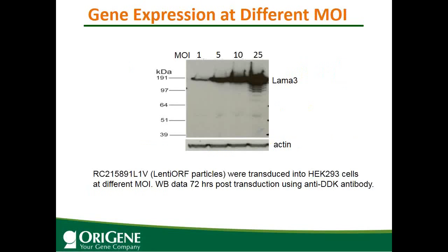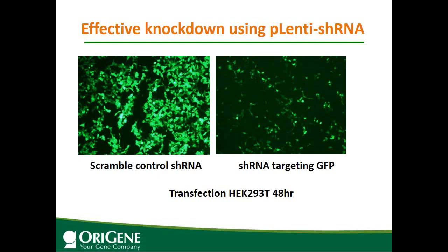This data shows gene expression at different MOI. MOI stands for Multiplicity of Infection — the number of viral particles per cell. MOI 1 means only one virus per cell, and MOI 10 means ten viral particles per cell. You can see the higher the MOI, the higher the gene expression is. So if you want higher gene expression, you can use a higher MOI.